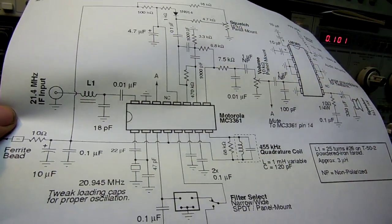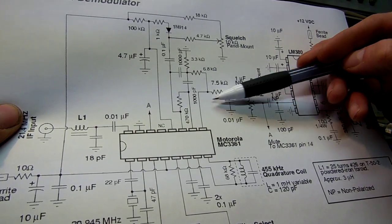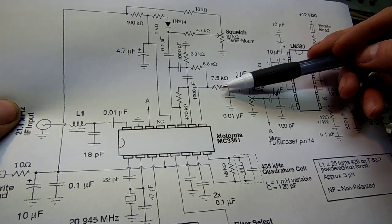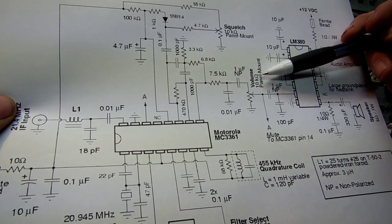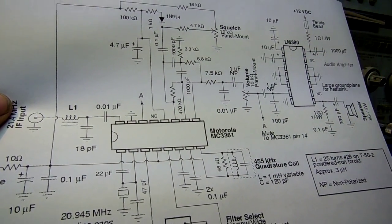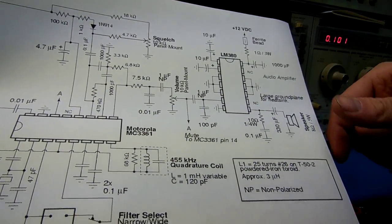It also has an optional squelch circuit. The FM output is low-pass filtered and sent through a volume potentiometer to a LM380 2.5 watt audio amplifier. It goes out to speaker.